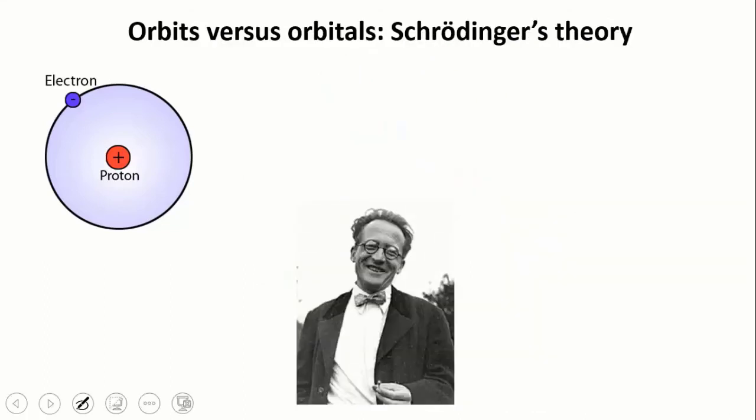When de Broglie's theory was published, it was taken up by Erwin Schrödinger, and along with work by Einstein and Bohr, he developed it into a new theory that described how the electron might move around the nucleus. Schrödinger described the electron's path around the nucleus not as a defined orbit, but as what he called a wave function.